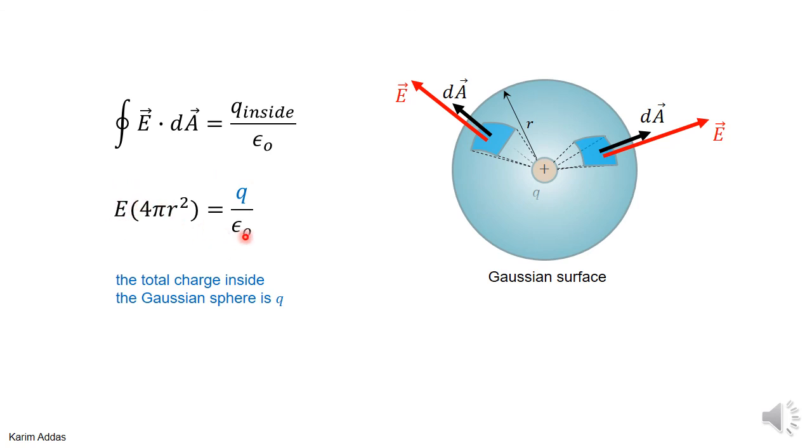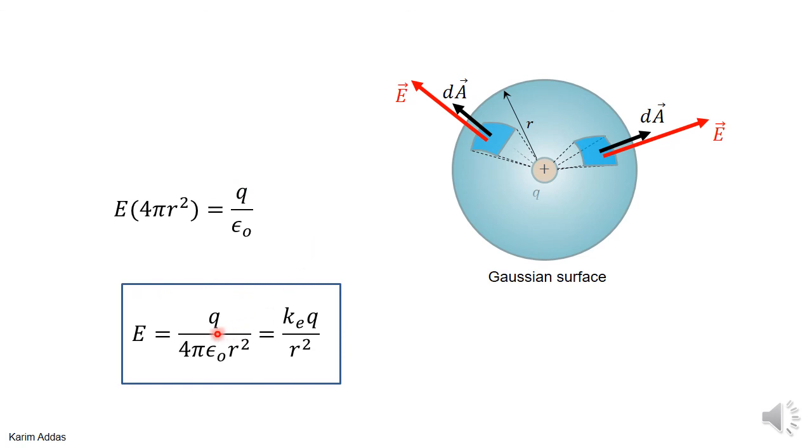If you just multiply, divide by 4 pi r squared, you get the final result that the electric field is q over 4 pi epsilon naught r squared. And we know before that ke is just 1 over 4 pi epsilon naught, so you can write the electric field as keq over r squared. So we basically proved Coulomb's law starting from Gauss's law.